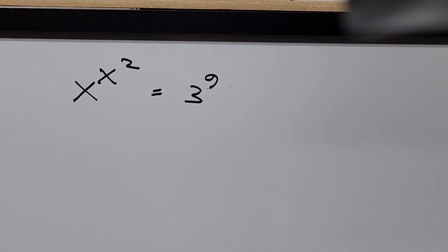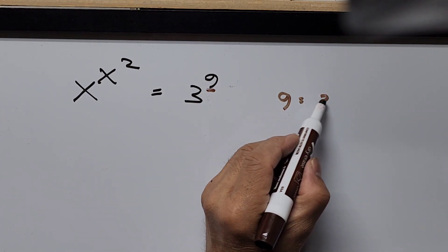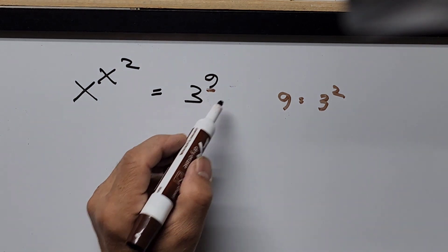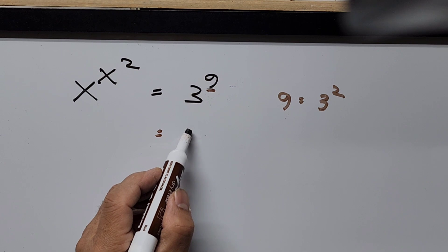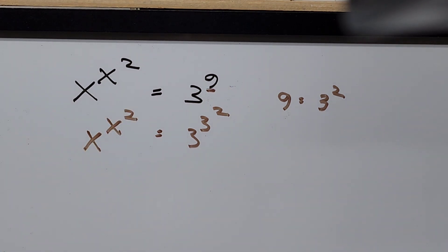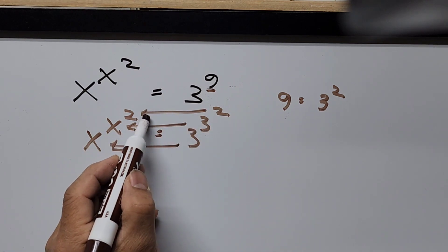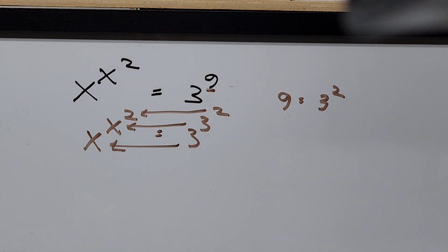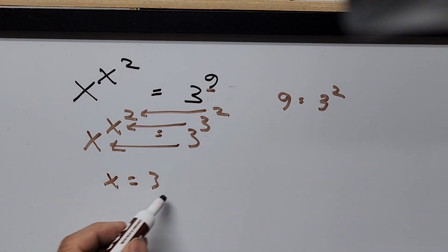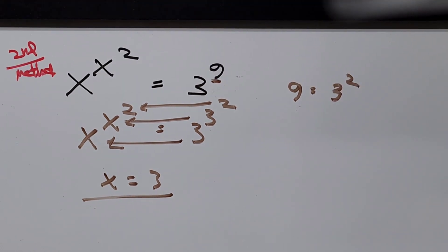Now for the second method, which is more straightforward. We focus on the exponent 9 and rewrite it as 3 squared. Substituting this into the equation gives us x to the power of x squared equals 3 to the power of 3 squared. By direct comparison: 3 corresponds to x, 3 corresponds to x again, and the exponent 2 corresponds to the same 2 on the left side. So x is equal to 3 — simple, short, and you can solve it just by looking at it. The second method confirms x equals 3.